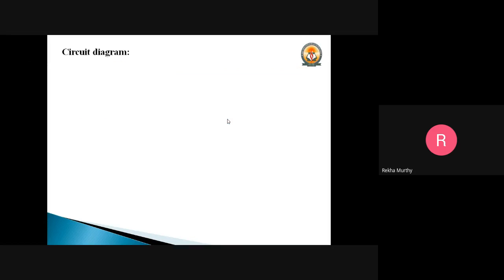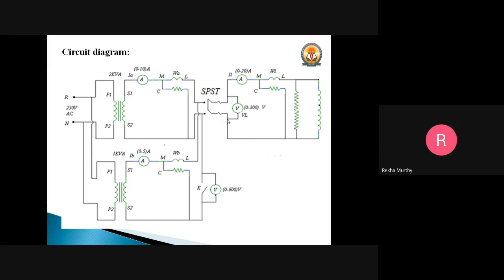Let us see the circuit diagram. Here we can observe that this first part of the circuit is almost the OC test what we had conducted, and this was the SC test what we had conducted. Almost it is similar. The difference is we are going to add one more transformer we have to connect.